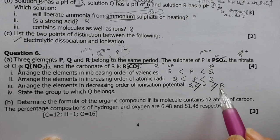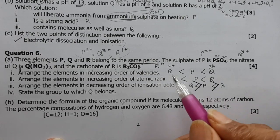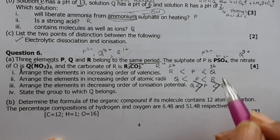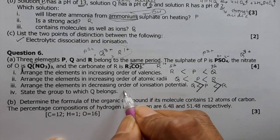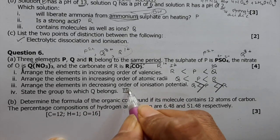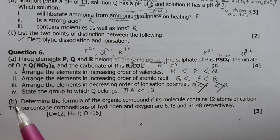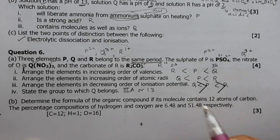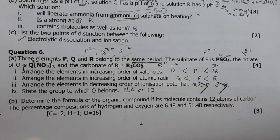Q is 3+ valency, so it belongs to Group 3A (Group 13).